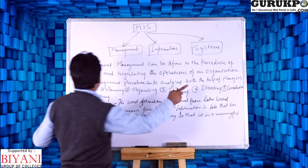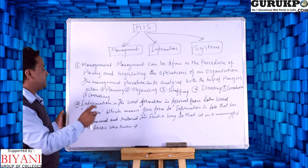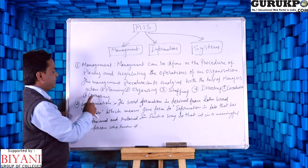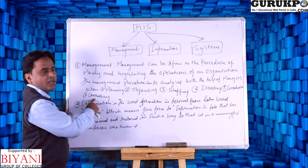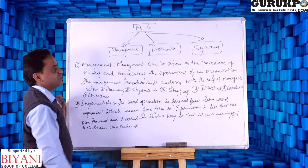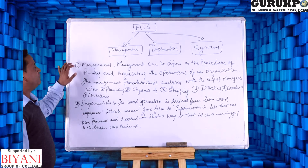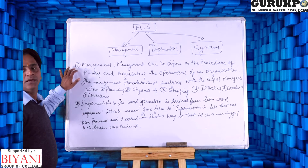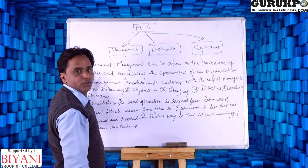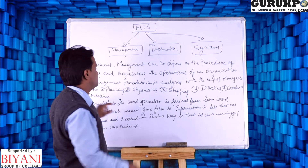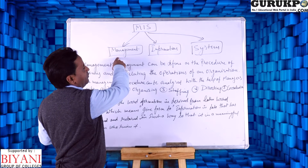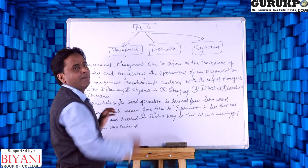Then coordinating — we have to coordinate. Then controlling. We have to use these six points — planning, organizing, staffing, directing, coordinating, and controlling — to manage things in management with the help of MIS.